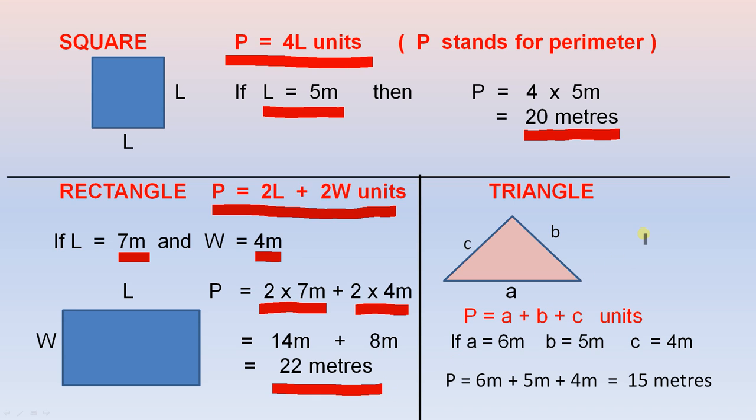For a triangle, if you have a triangle and the lengths of the sides are A, B and C, the perimeter is A plus B plus C units.